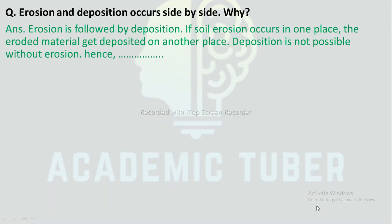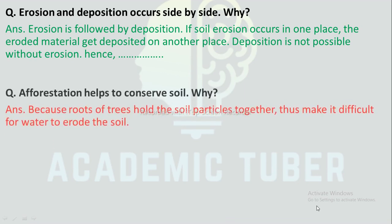Reasoning question: Why do erosion and deposition occur side by side? Answer: Erosion is followed by deposition. If soil erosion occurs in one place, the eroded materials get deposited in another place. Deposition is not possible without erosion. Hence, erosion and deposition occur side by side.